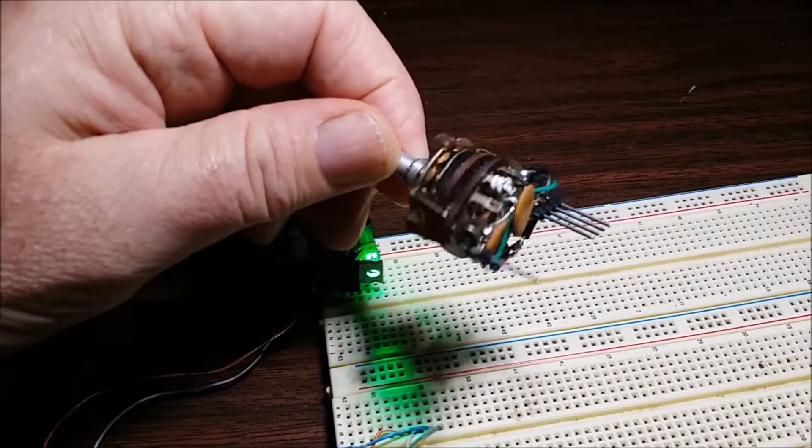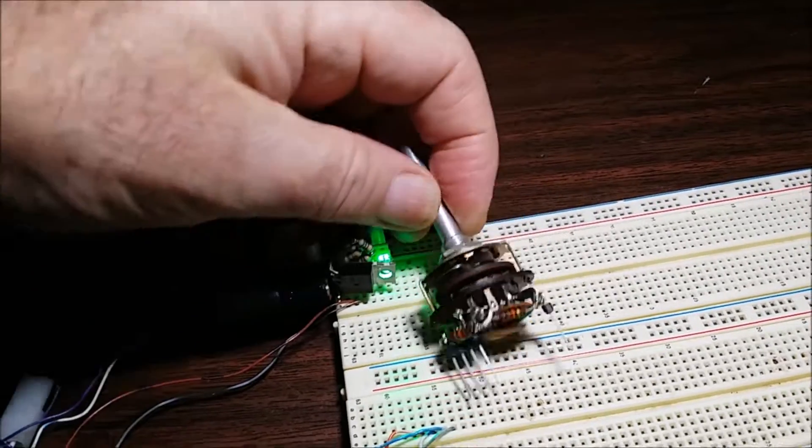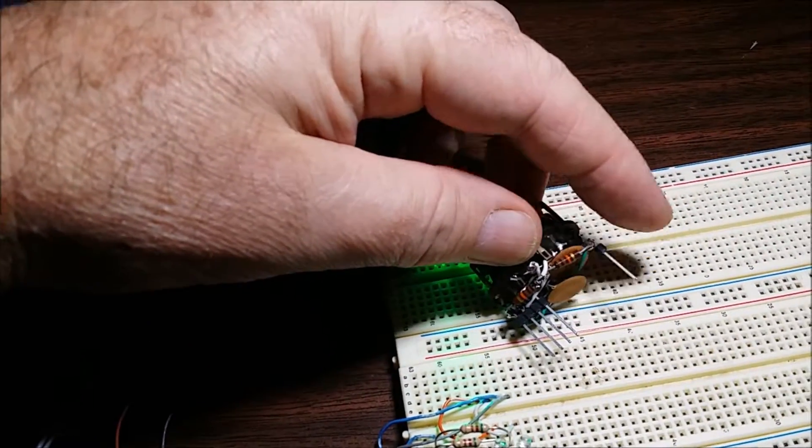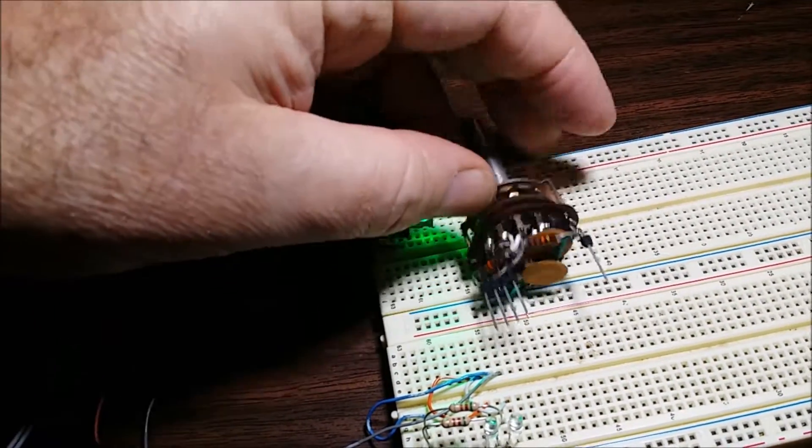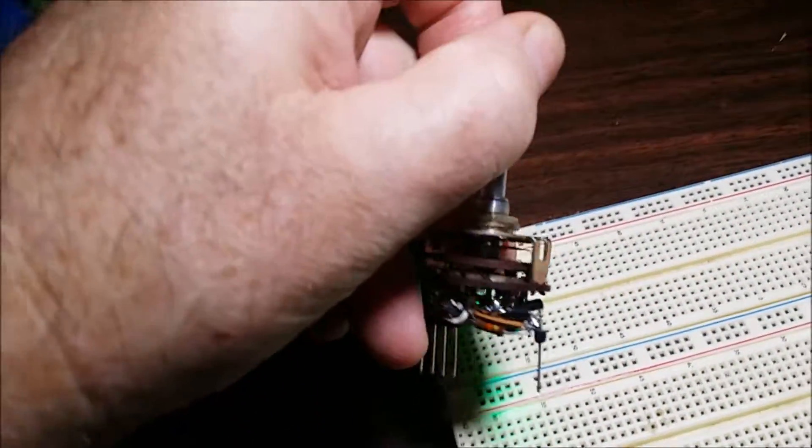Here's the rotary switch wired up as an encoder switch. This pin over here is the same as the second pin from the outside on the set of four. I'm just putting it here so that I can have it give me more stability in the board.